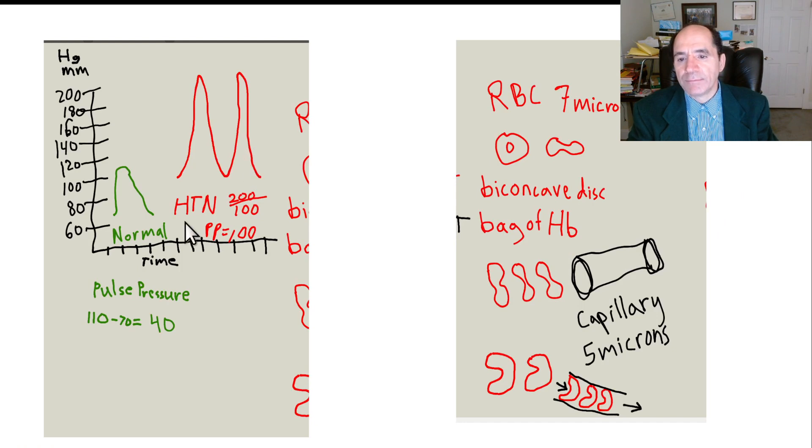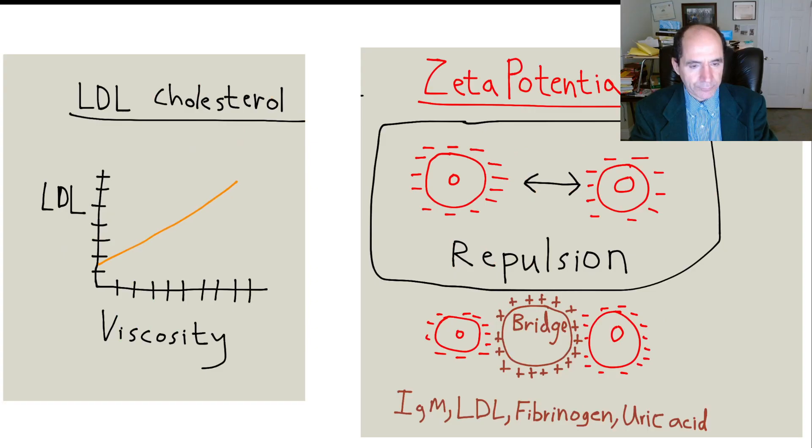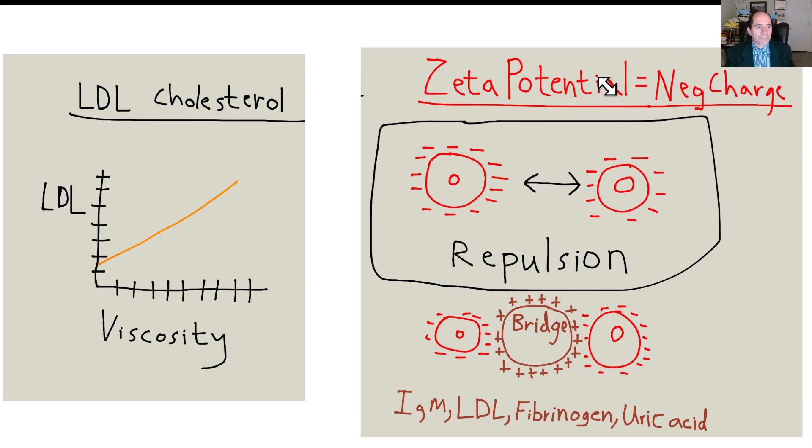So here's a normal blood pressure, let's say about 110 over 70. Here'd be severe hypertension, 200 over 100. We talked about the RBCs having to deform, like fold back on themselves, like a Pac-Man ghost moving around. They have to be deformable. The higher the cholesterol, the LDL cholesterol, the higher the blood viscosity, meaning the thicker the blood, because LDL is a bridging molecule sticking six red blood cells together.